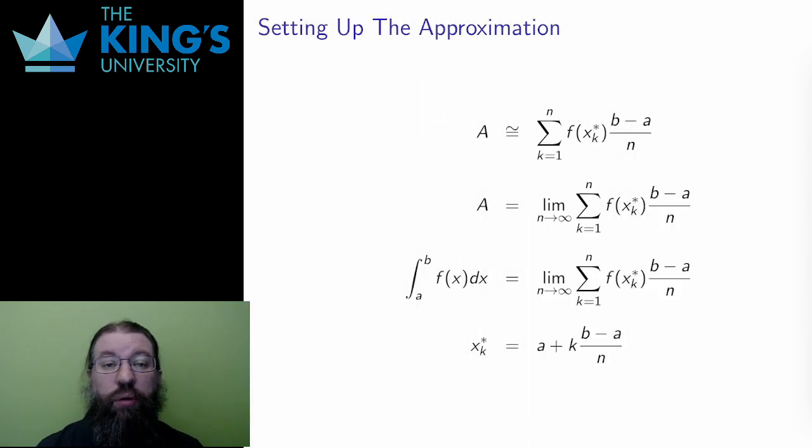Let me now go to the algebra. I have the width of a small rectangle, b minus a over n. I have the height of a small rectangle, f of xk star. I have n rectangles, which I index using the index k. So xk star is a point in the kth rectangle. The product is the area of the kth rectangle, and the approximation process adds these up.